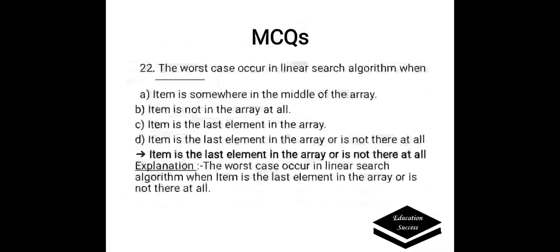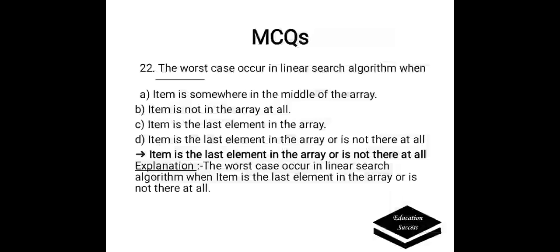The worst case occurs in linear search algorithm when: a) item is somewhere in the middle of the array, b) item is not in the array at all, c) item is the last element in the array, or d) item is the last element in the array or is not there at all. Correct answer is d. The worst case occurs when the item is the last element in the array or is not there at all.